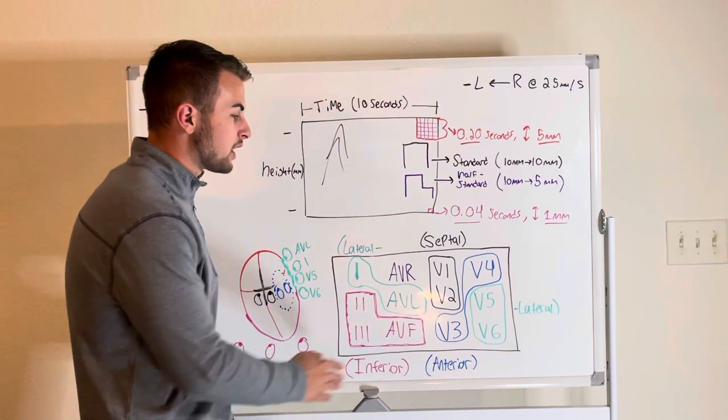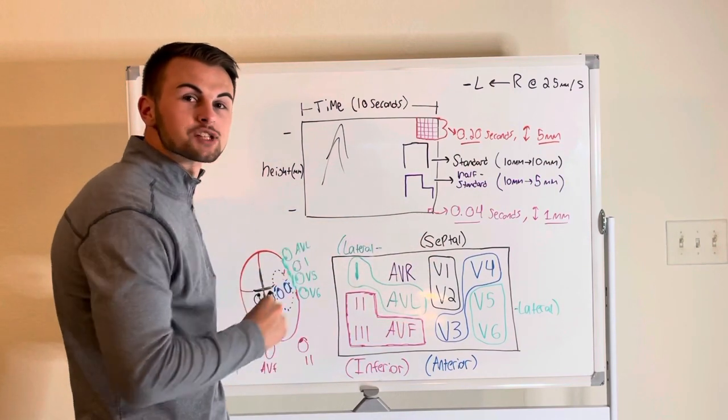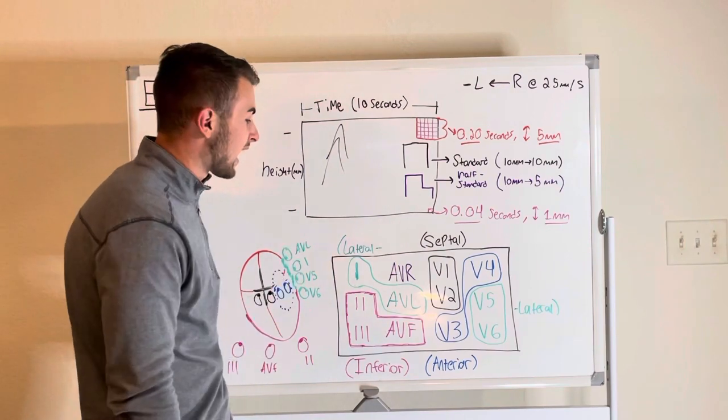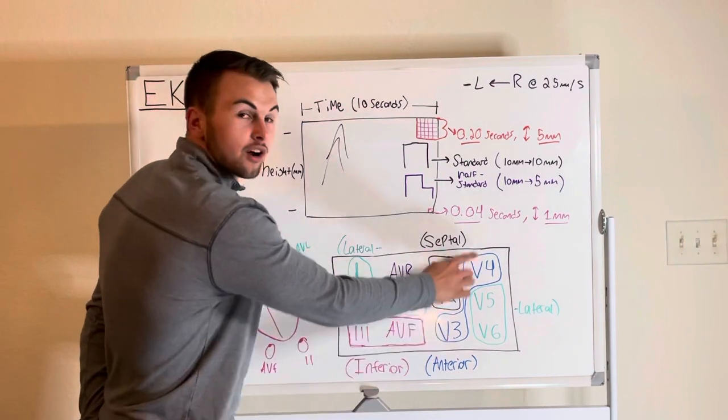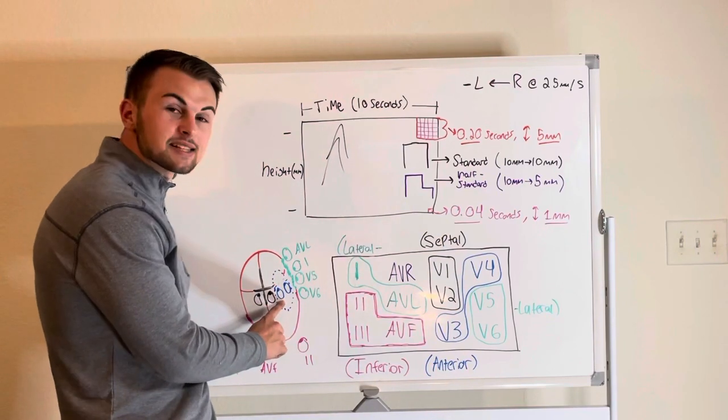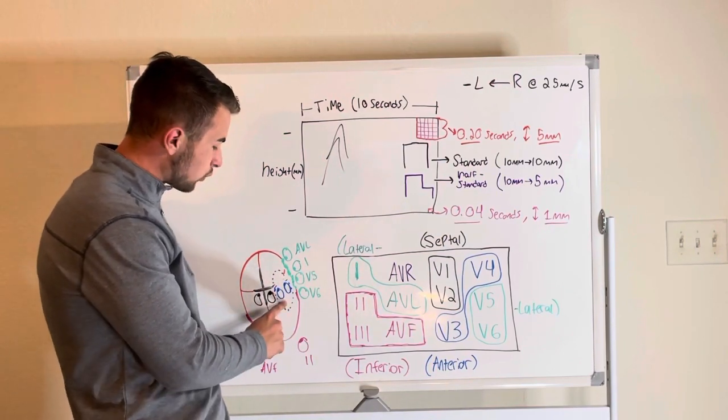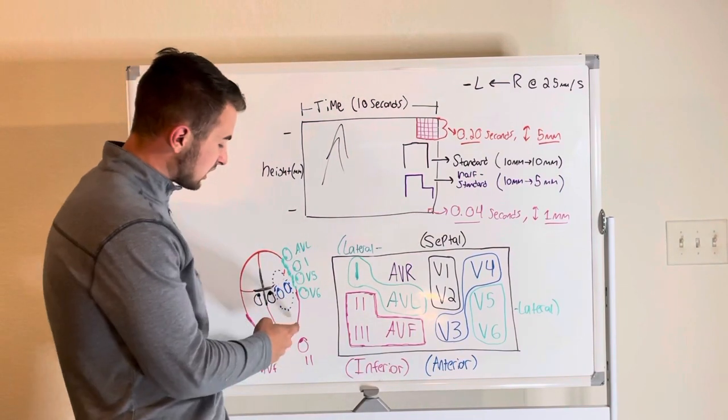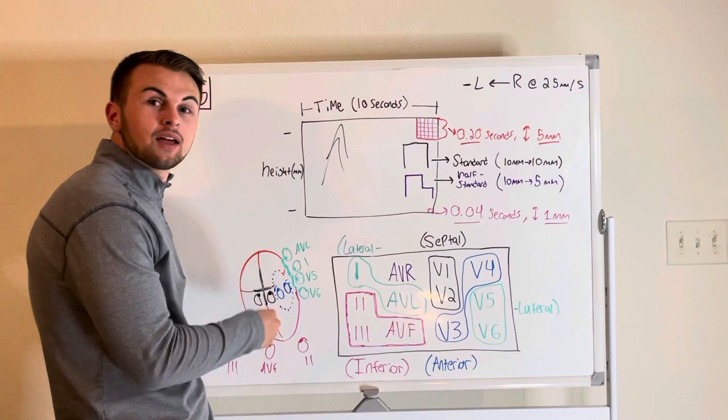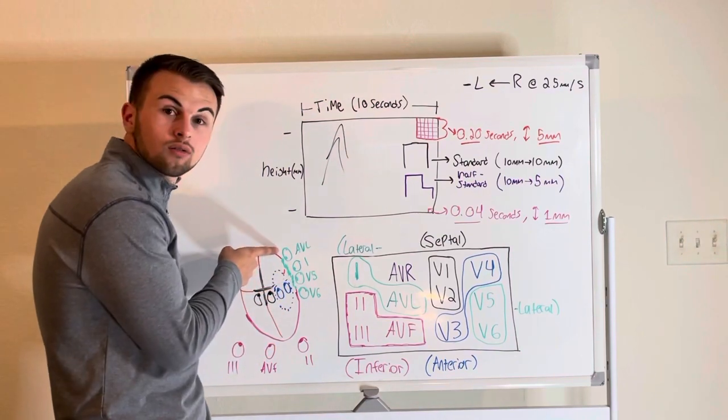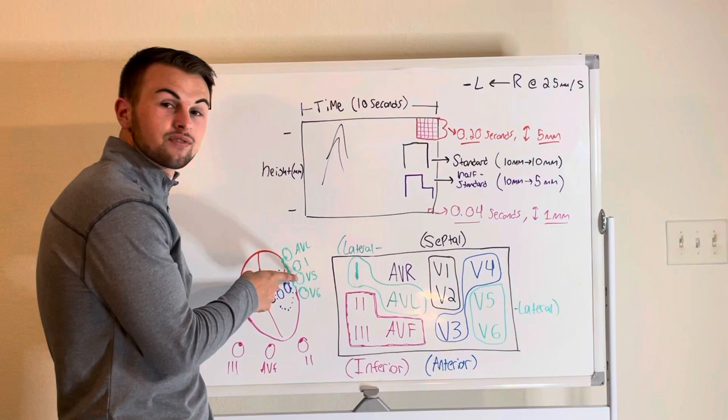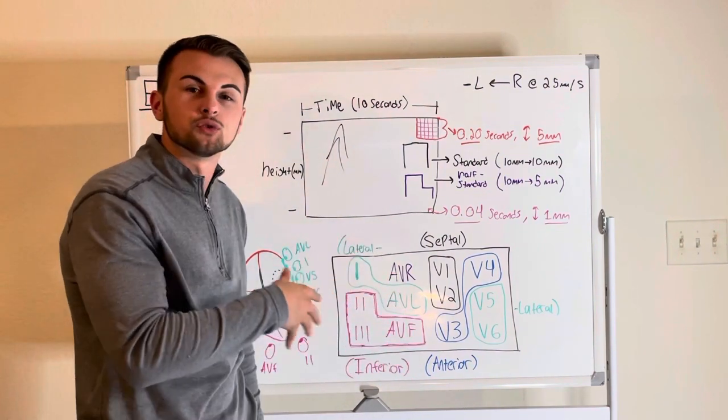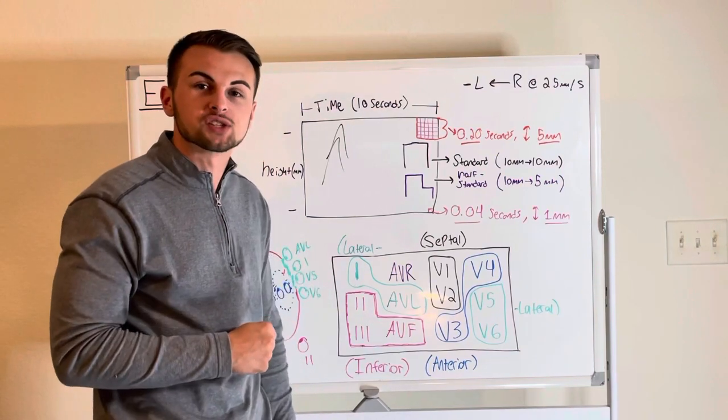Now if your patient has a septal MI the damage can be seen by leads V1 and V2. If your patient has an anterior MI the leads that would be able to see this damage are V3 and V4. And lastly if your patient has a lateral MI the damage can be seen by leads AVL, 1, V5 and V6. This pattern is very helpful to quickly determine the location of your patient's injury.